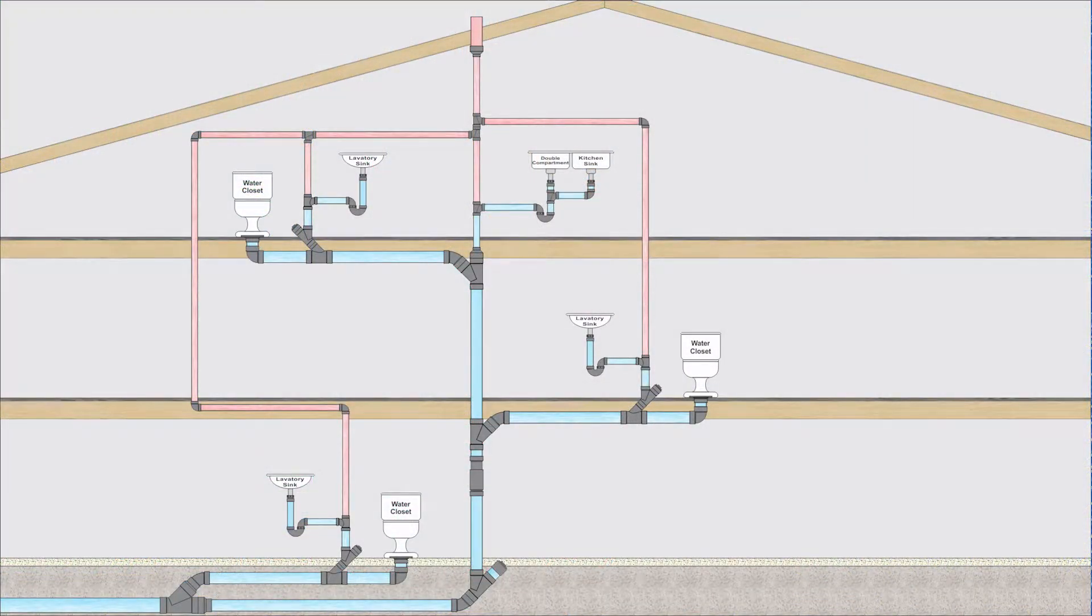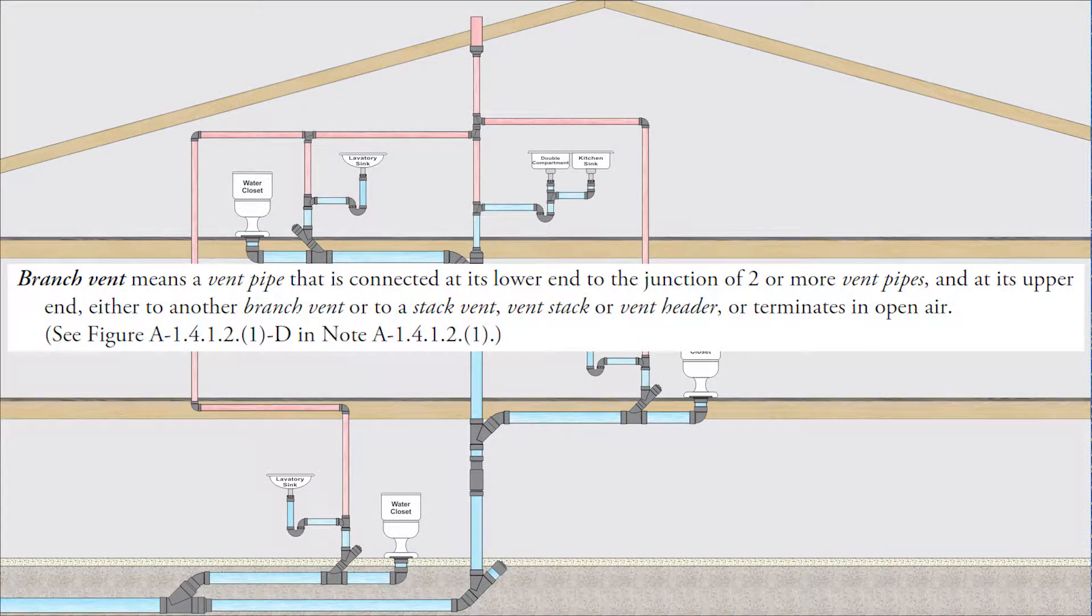First, we need to define branch vent. Branch vent means a vent pipe that is connected at its lower end to the junction of two or more vent pipes and at its upper end to either a branch vent or to a stack vent, vent stack, or vent header, or terminates in open air.